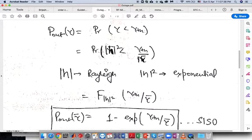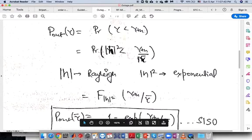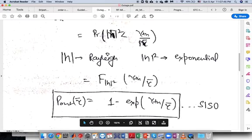And this particular equation can be rewritten in terms of the CDF of mod of h square, gamma th by gamma bar.